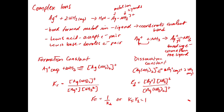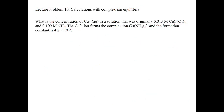Now we're going to look at a problem that uses complex ions. What is the concentration of copper 2+ in a solution that was originally 0.015 molar copper nitrate and 0.1 molar ammonia? When you combine copper and ammonia, it forms a complex ion: copper tetraammine 2+, [Cu(NH3)4]2+. The formation constant is 4.8 times 10 to the 12th.